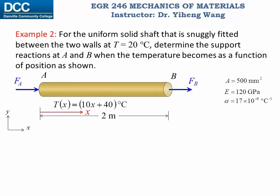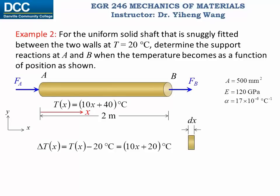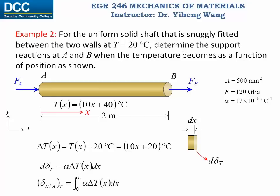Now let's work on the displacement caused by the temperature change. The temperature change is the final temperature T(x) minus the initial temperature of 20°C, which gives 10x + 20°C — still a function of position. Therefore, for a differential element of length dx, the deformation is d(δT) = alpha · ΔT(x) · dx. The total displacement caused by the temperature change is the integration of this term over the length, which evaluates to 3.825 × 10⁻³ meters.